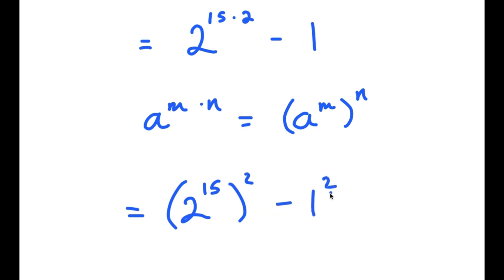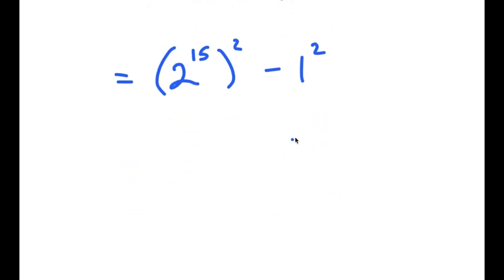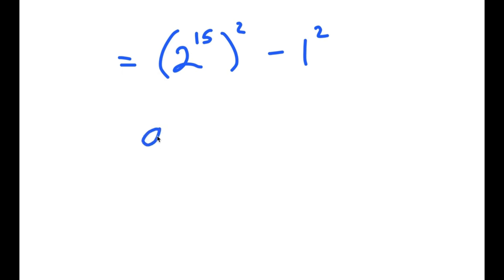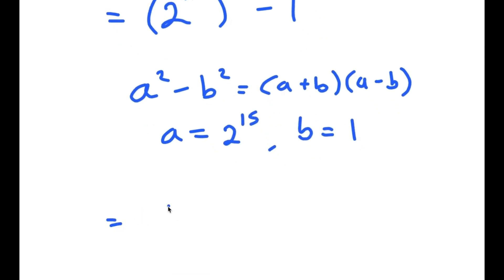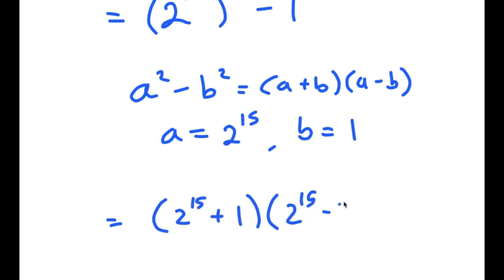And negative 1 is the same thing as negative 1 squared. Now, if I have something in the form a squared minus b squared, this is equal to a plus b times a minus b. So in this case, a is 2 to the power of 15 and b is 1. So now I have 2 to the power of 15 plus 1, times 2 to the power of 15 minus 1.